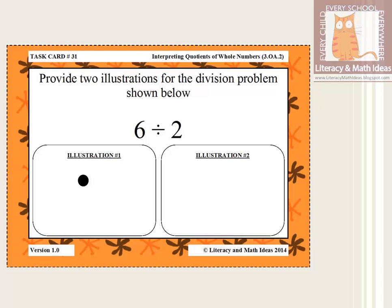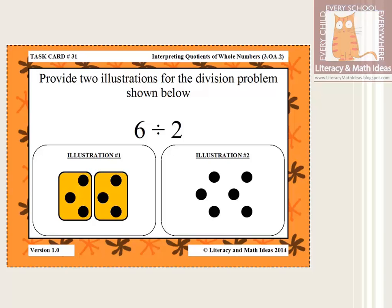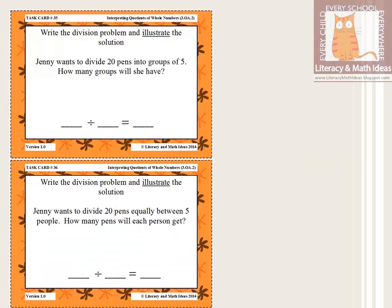We know 6 divided by 2 is 3. To illustrate this: using the first approach, the student jots down 6 items and forms two equal groups — each group has 3 items. For the second illustration, using the second approach, the student again starts with 6 items but makes groups each containing 2 items — resulting in 3 groups. The objective is to get students to understand the different approaches to the physical meaning of division.